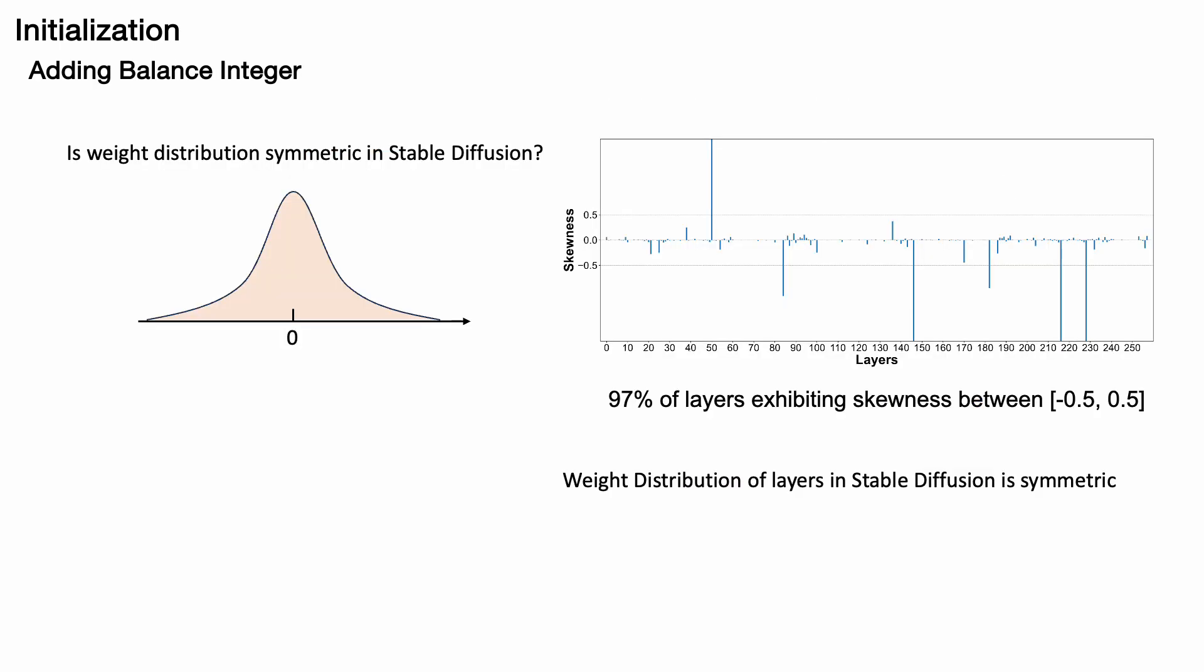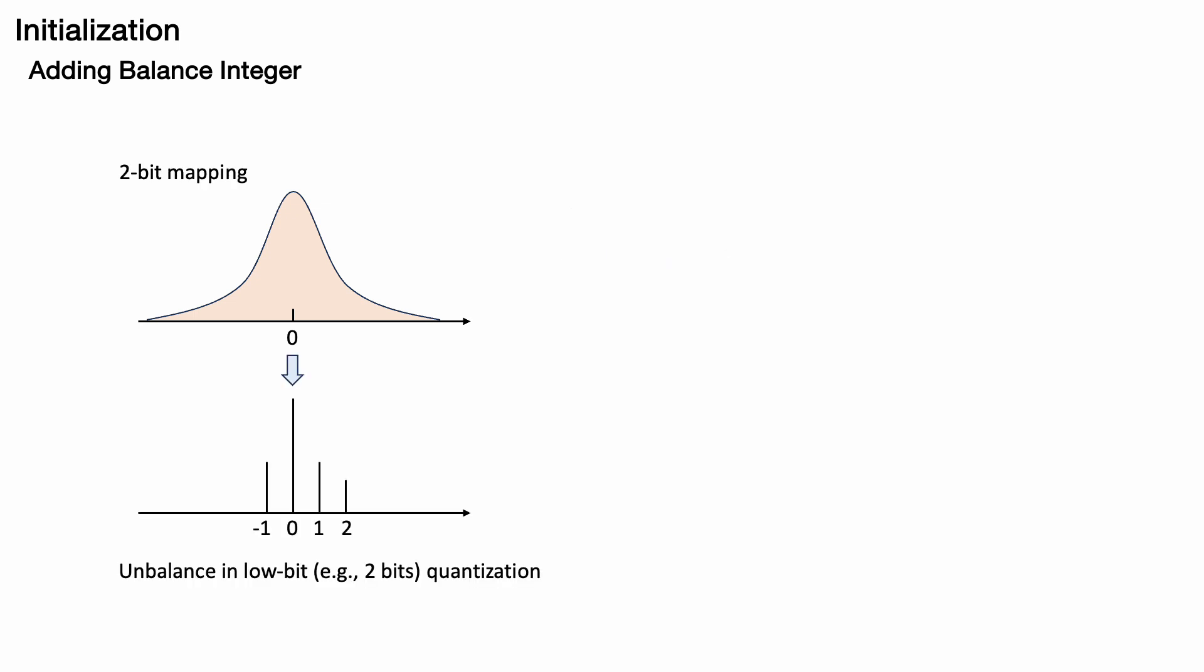The second strategy involves adding a balancing integer. We begin by analyzing the weight distribution in stable diffusion through skewness measurements. The results, as depicted in the figure, show skewness values close to zero, indicating that the weight distribution in stable diffusion is symmetric. The issue arises with traditional quantization schemes, such as 2-bit mapping, where symmetric floating-point values are assigned to four discrete numbers: minus 1, 0, 1, and 2. This mapping results in an unbalanced and asymmetric distribution.